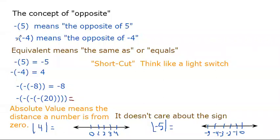This one means to take the opposite of what's inside the parentheses, which is a negative 4. So this is read as the opposite of a negative 4. The dash on the outside of the parentheses stands for the words 'the opposite of,' and you're taking the opposite of whatever's in the parentheses.